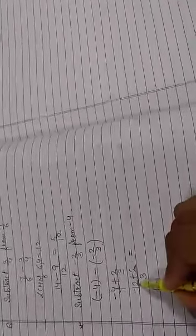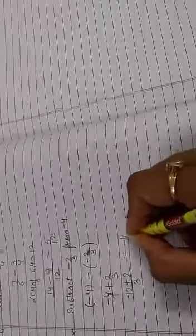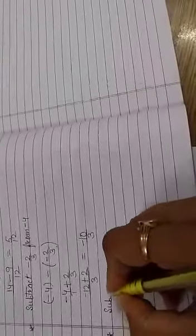Minus 12 plus 2 is minus 10. So our answer is minus 10 upon 3.